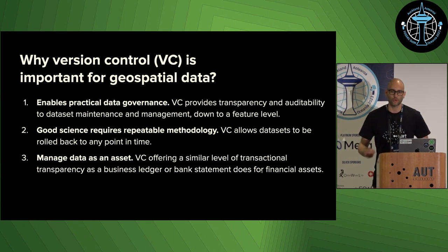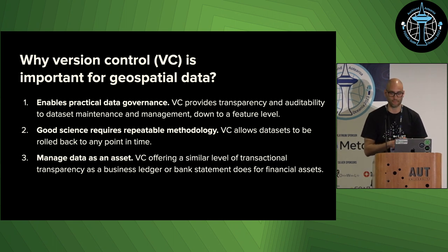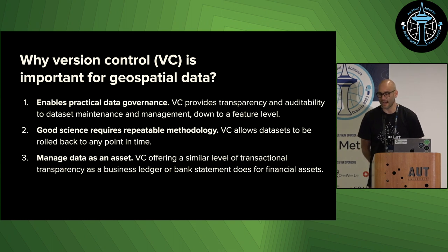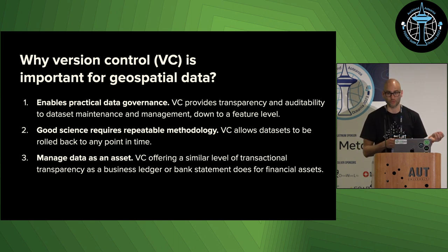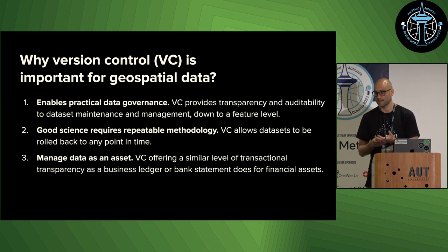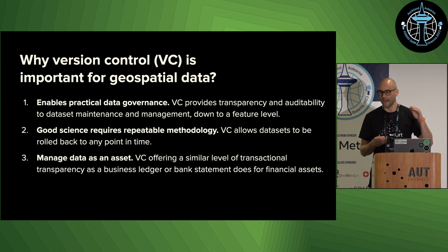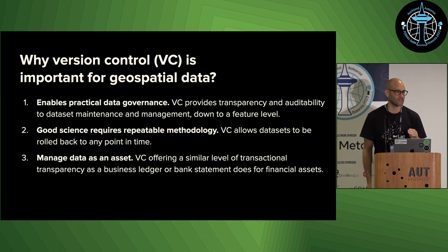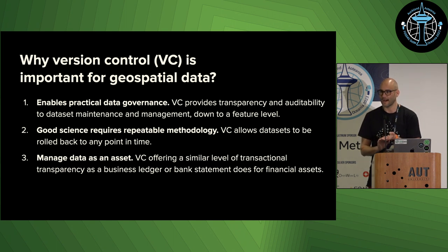Before we go further, I want to talk about why version control is actually important for geospatial data. If you're from a large organization you're probably used to talking about data governance — and probably view it as a small team of people that have a meeting semi-regularly, with one spreadsheet and very little to do with actual data. What version control enables is actual transparency into the dataset and transactional auditability on a feature level. This is practical, tactical data governance — it lets you see how a dataset has been treated, what its lifecycle has been like, and what the quality really is.